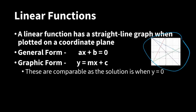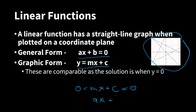The general form of a linear function or equation is ax plus b equals 0. In the graphic form we usually use y equals mx plus c, where m is the slope and c is the y-intercept. These two are comparable, as the solution for a linear function is when y equals 0. So when y equals 0, it equals mx plus c, which is practically the same as mx plus c equals 0, comparable to ax plus b equals 0 — just different coefficients. We will use the graphic form in this presentation.